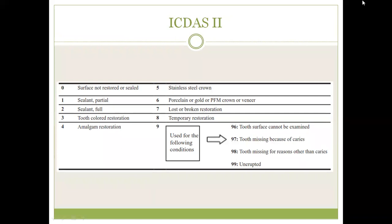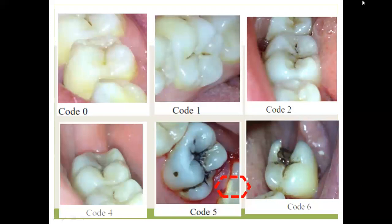ICDAS is a two-digit criteria, with the second digit being the caries code. The first digit denotes: 0 — surface not restored or sealed; 1 — sealant partial; 2 — sealant full; 3 — tooth-colored restoration; 4 — amalgam; 5 — stainless steel crown; 6 — PFM or veneer; 7 — broken restoration; 8 — temporary restoration; and 9 — conditions such as tooth that cannot be examined, tooth missing because of caries, tooth missing for reasons other than caries, or unerupted teeth.